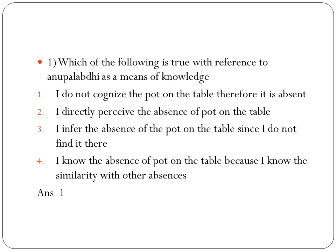We will read the options: I do not cognize the pot on the table, therefore it is absent. I directly perceive the absence of the pot on the table. I infer the absence of the pot on the table since I do not find it here. I know the absence of the pot on the table because I know the similarity with other absences. A student who doesn't know what Anupalabdhi is sure to get confused with all four options, though every single option has a marked difference from the other three.